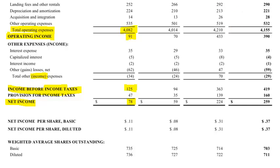There's one more calculation below net income: earnings per share. Investors are often interested not just in the total net income number, but what that means on a per-share basis. We look at the number of shares outstanding — don't worry about the difference between diluted and basic for now — and divide the net income by the number of shares to arrive at earnings per share for the quarter.